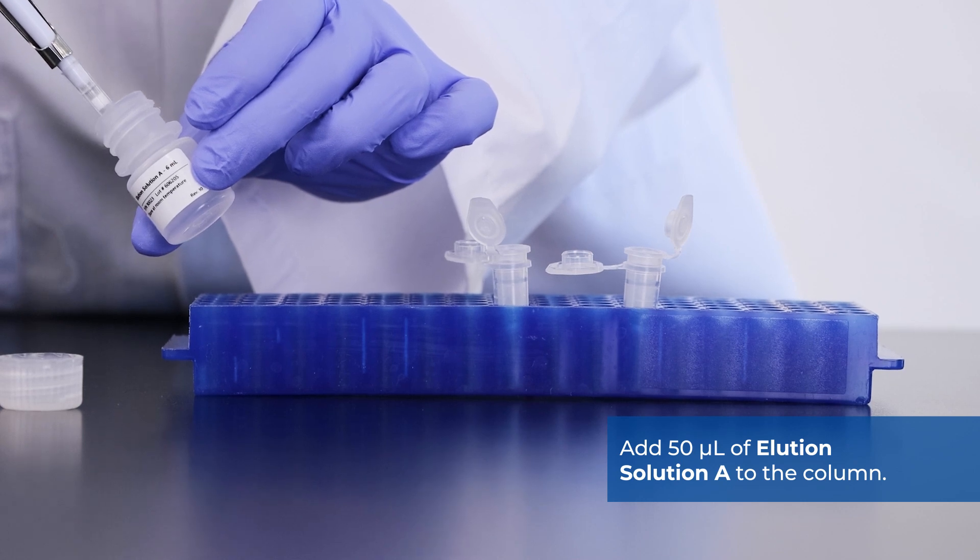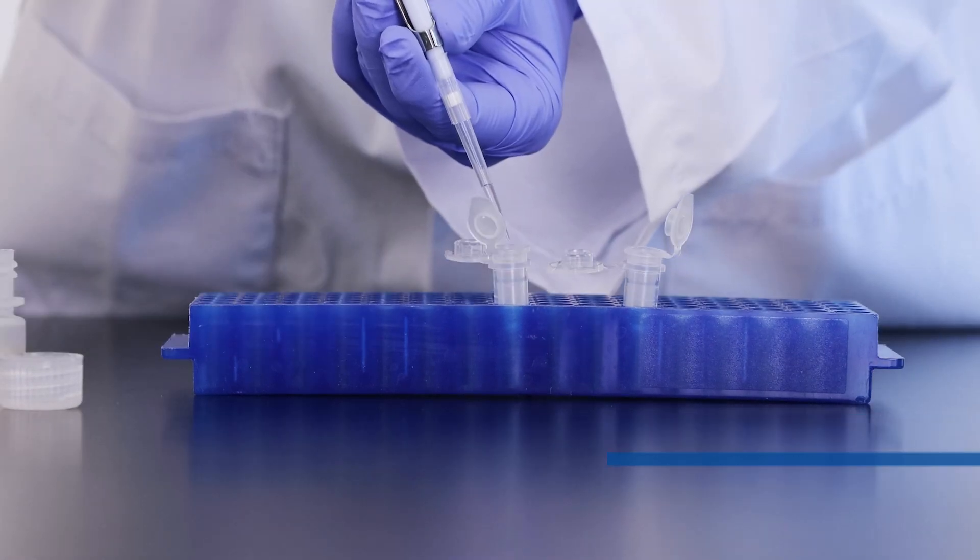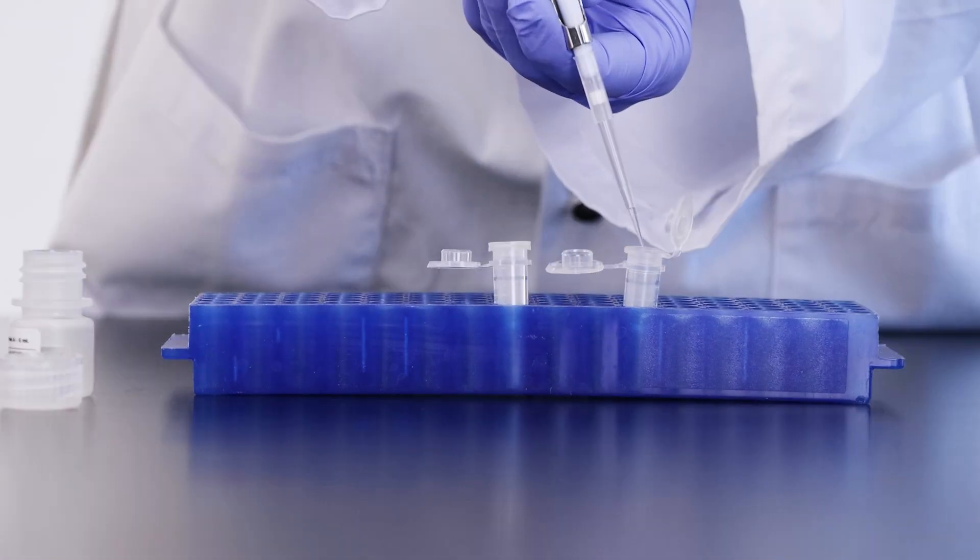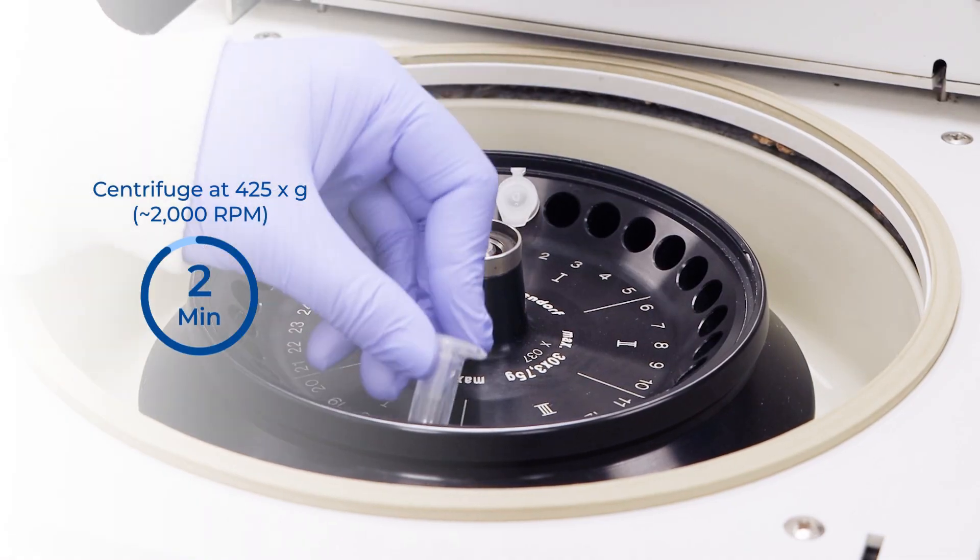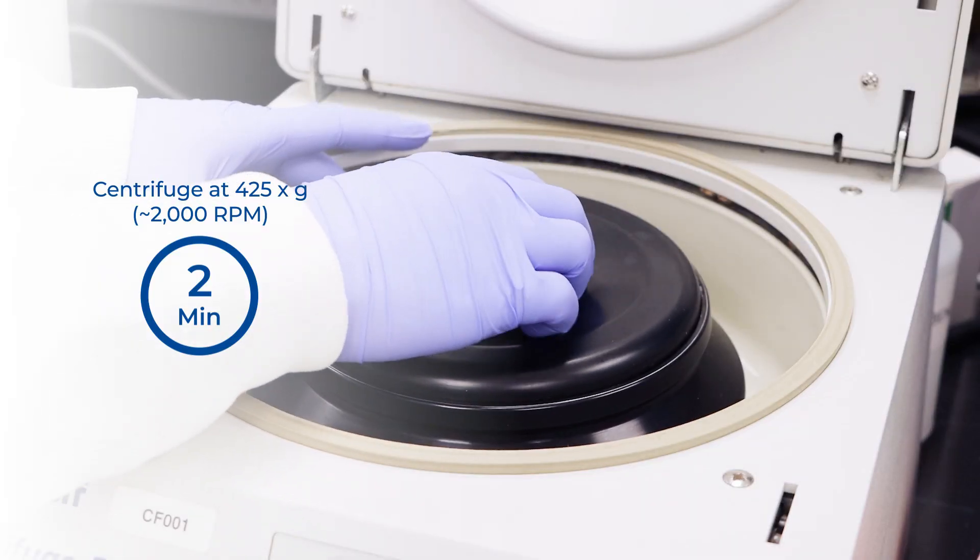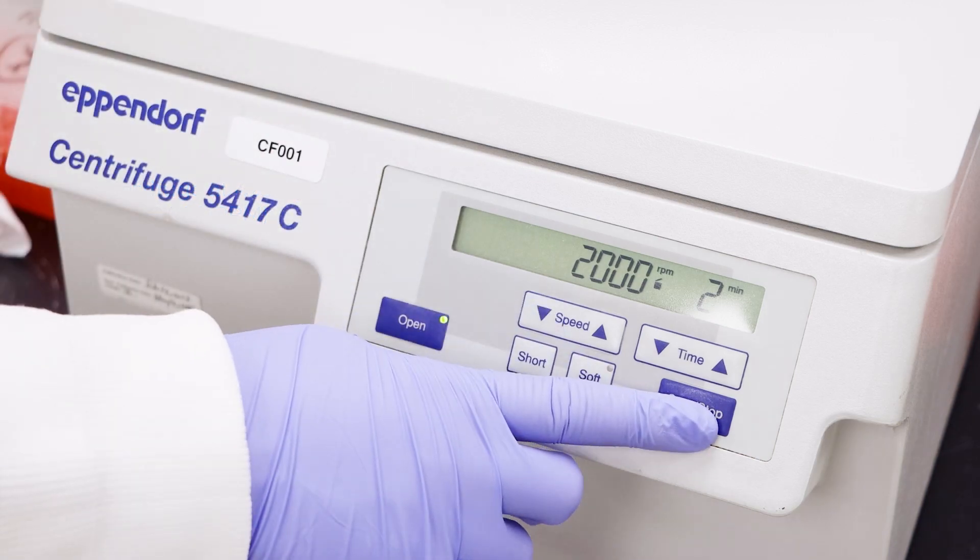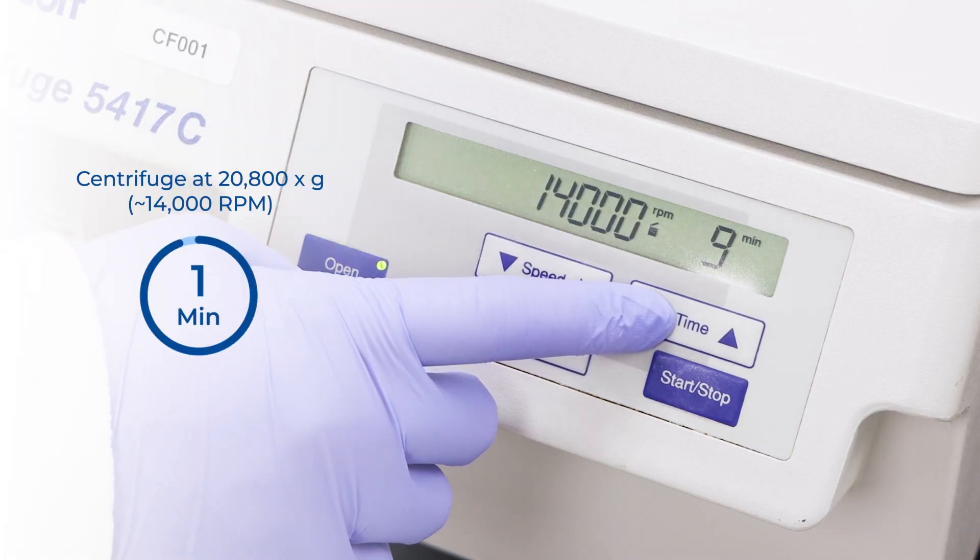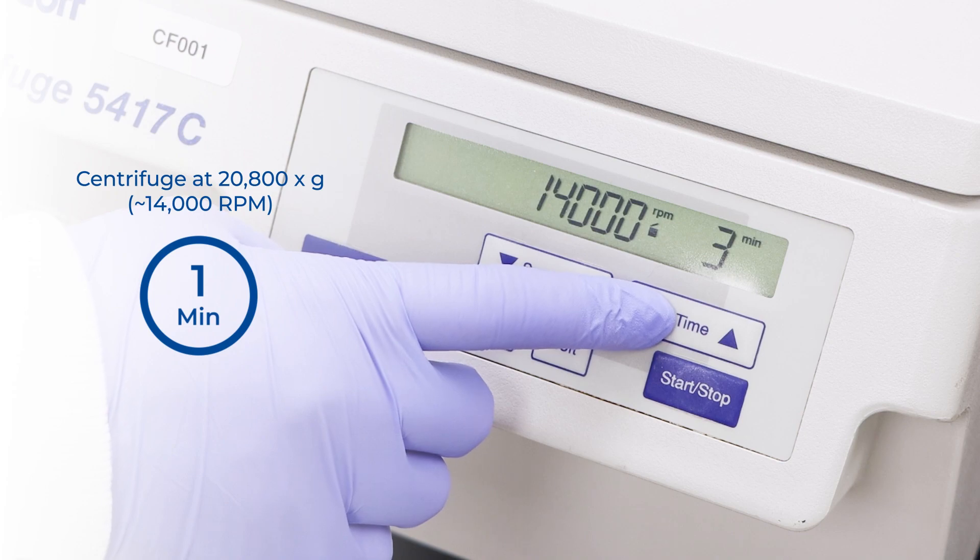Add 50 microliters of elution solution A to the column. We do not recommend eluting the RNA in a lower elution volume. Centrifuge for 2 minutes at 425 G or 2000 RPM. Followed by 1 minute at 20,800 G or 14,000 RPM.